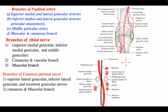Now let's look at the important branches of the popliteal artery. There are many branches, but the key ones are: superomedial and superolateral genicular arteries, inferomedial and inferolateral genicular arteries, middle genicular artery, and small muscular and cutaneous branches. The popliteal artery will also be covered in the next topic.